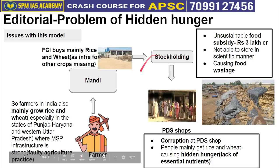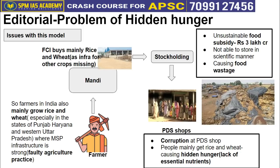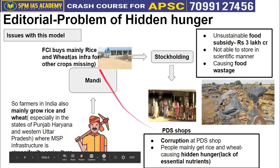Since farmers grow mainly rice and wheat, only rice and wheat reach PDS shops. Rice and wheat are predominantly carbohydrates — they fill the stomach, but people are deprived of essential micronutrients. This leads to hidden hunger: a state where people are calorically full but nutritionally deficient. The entire MSP-PDS system access is leading to this problem of hidden hunger.